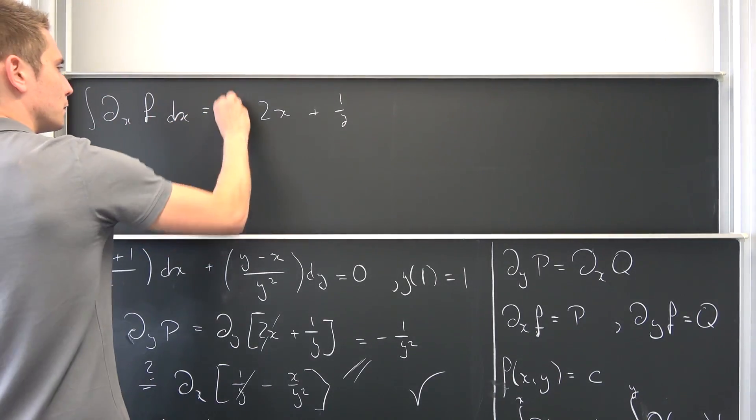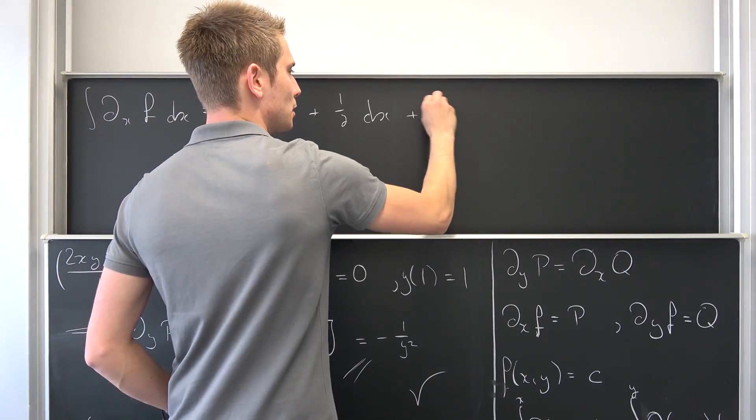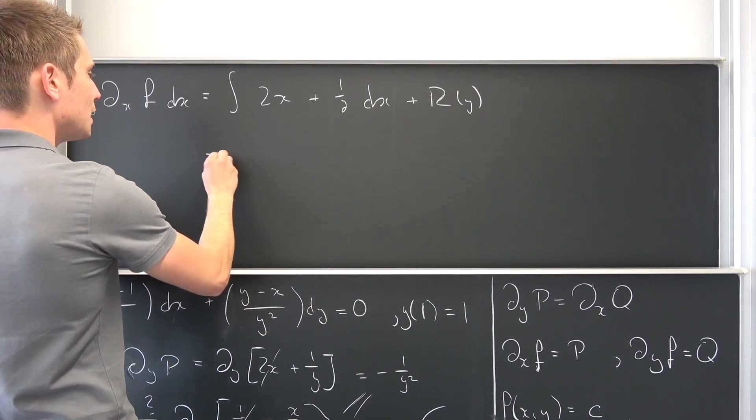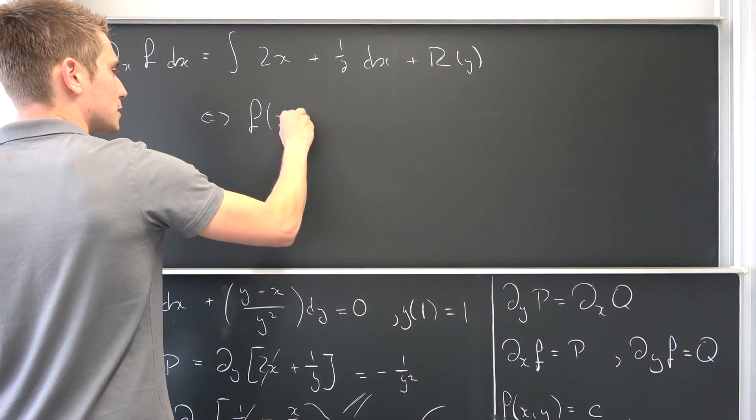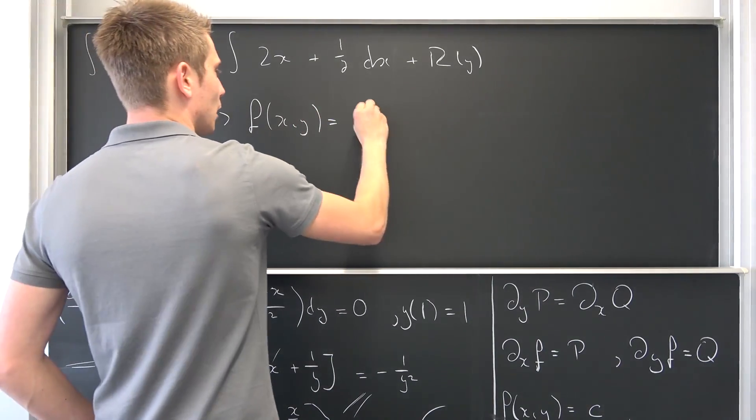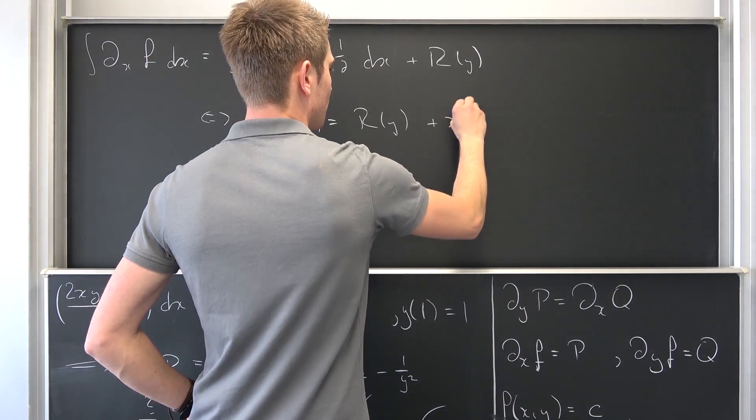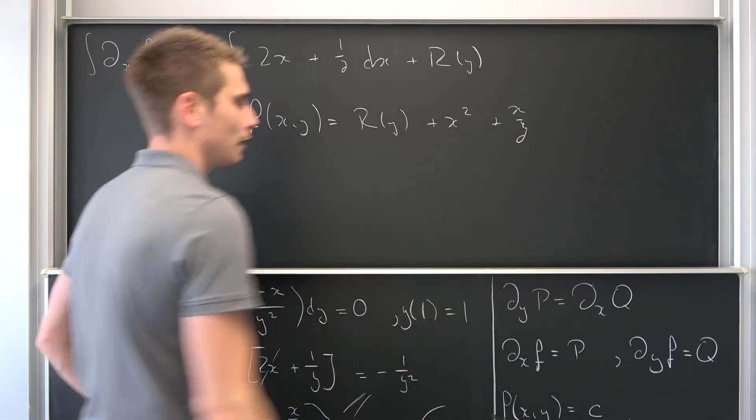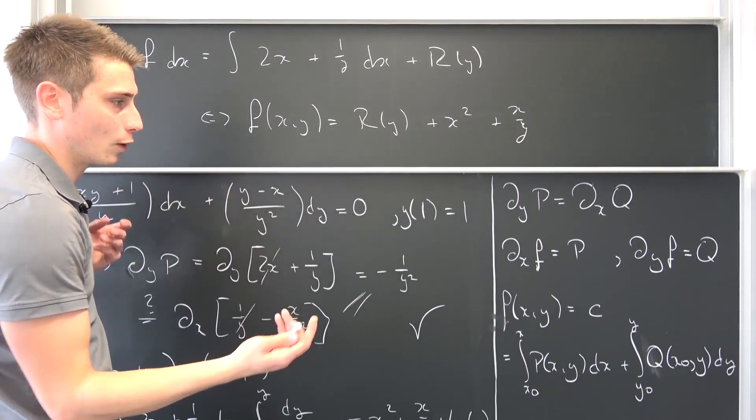Once again, we are going to integrate it with respect to x, leaving us with a remainder function with respect to y. Integrating this is what we got before, basically giving us f(x,y) is nothing but r(y) plus x² plus x/y. Also, we have this other relationship just like as always. ∂ᵧf is nothing but Q.